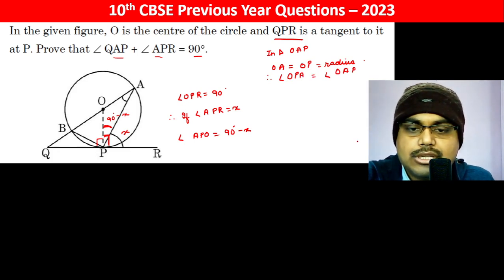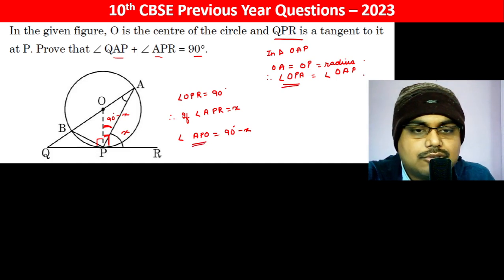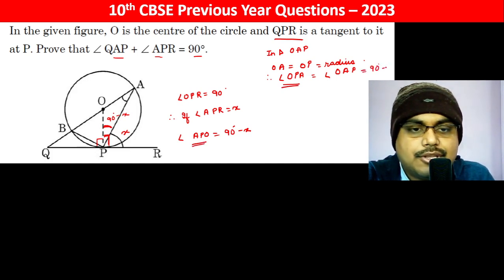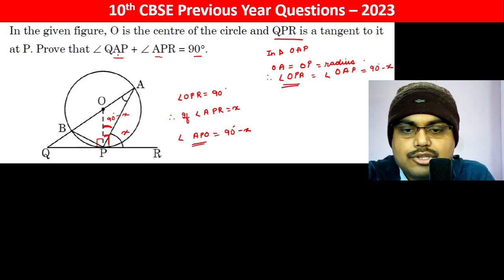So angle OPA equals angle OAP, which becomes 90 degrees minus X. Therefore, angle QAP is 90 degrees minus X, and angle APR is X. So angle QAP plus angle APR equals 90 degrees.